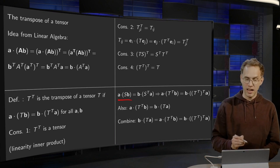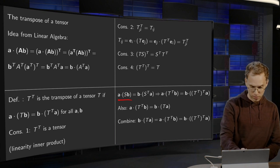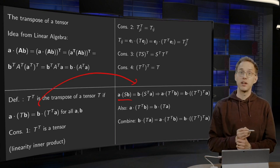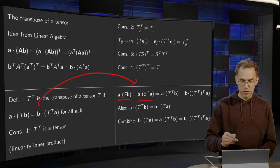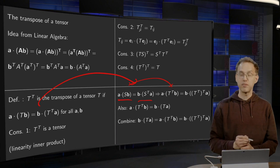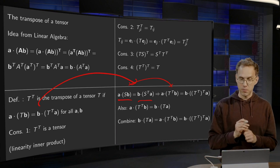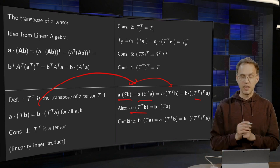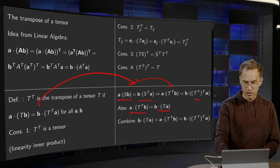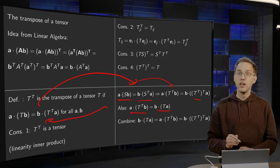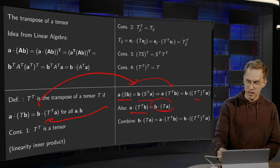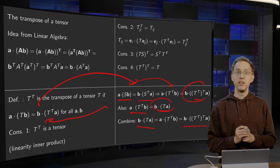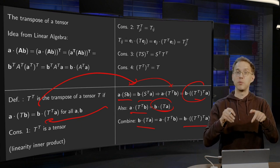Let me show why T transpose transpose equals T. If we have A inner product S times B, then from the defining rule, this equals B inner product S transpose times A. Now substitute S equals T transpose on left and right: A inner product T transpose B equals B inner product T transpose transpose times A. But we also know that A inner product T transpose B equals B inner product T times A, according to the definition. Combining those, B inner product T times A equals B inner product T transpose transpose times A, so the tensors T and T transpose transpose are the same.